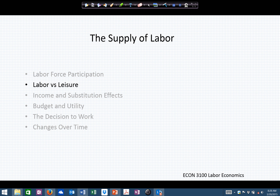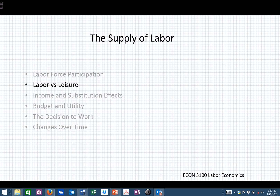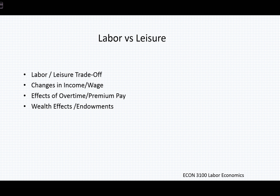As we continue our conversation on the supply of labor, we're now going to look at the labor-leisure tradeoff relationship. This has to do with the opportunity cost of leisure being an hour of labor, and knowing that we receive for that hour of labor some kind of a wage. We'll consider the effect in a model for labor-leisure tradeoff, look at the effect of income and wages, effects of overtime or premium pay, and wealth or endowment effects.